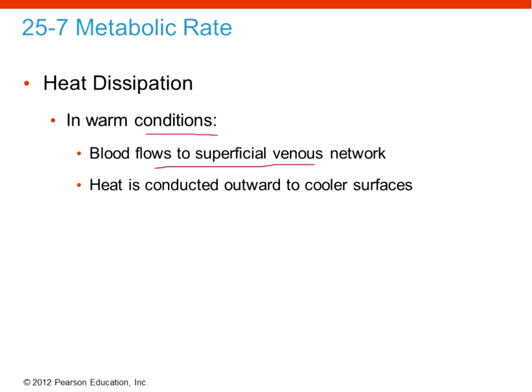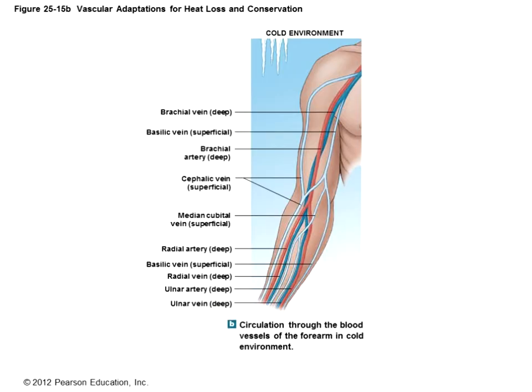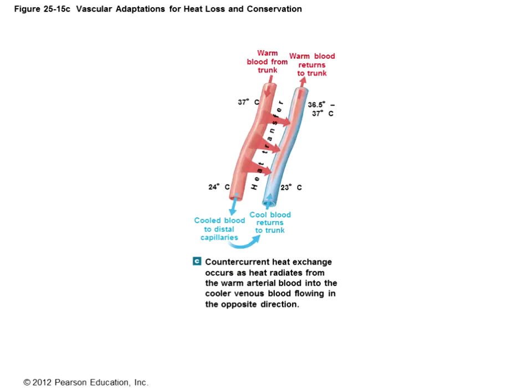In warm environments, the opposite occurs — blood flow increases to superficial veins and heat is conducted at the surface. These vascular adaptations — vasodilation and vasoconstriction — help the body maintain temperature depending on warm versus cold environmental conditions.